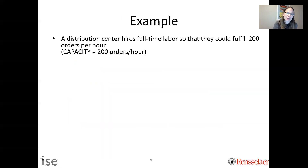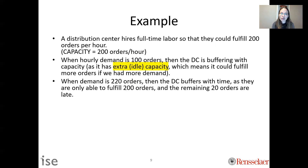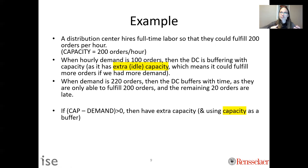For example: if you're a distribution center and hired full-time labor to fulfill 200 orders per hour, that's your capacity. In a given hour, if you only have 100 orders, you're using capacity as a buffer — idle capacity. But the next hour, 220 orders show up. Since you can only process 200, those last 20 are late — you said you'd get them to the customer tomorrow, but they get them the day after. That's using time as a buffer.